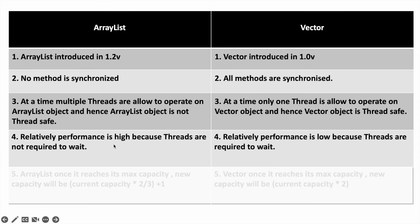Relatively, ArrayList has higher performance because threads are not required to wait — multiple threads can access the ArrayList object simultaneously. Vector, on the other hand, is performance-wise slow, because all methods are synchronized and only one thread can access at a time. Once it finishes the execution of the previous thread, then only another thread can access. So, performance-wise, Vector is a little slow.